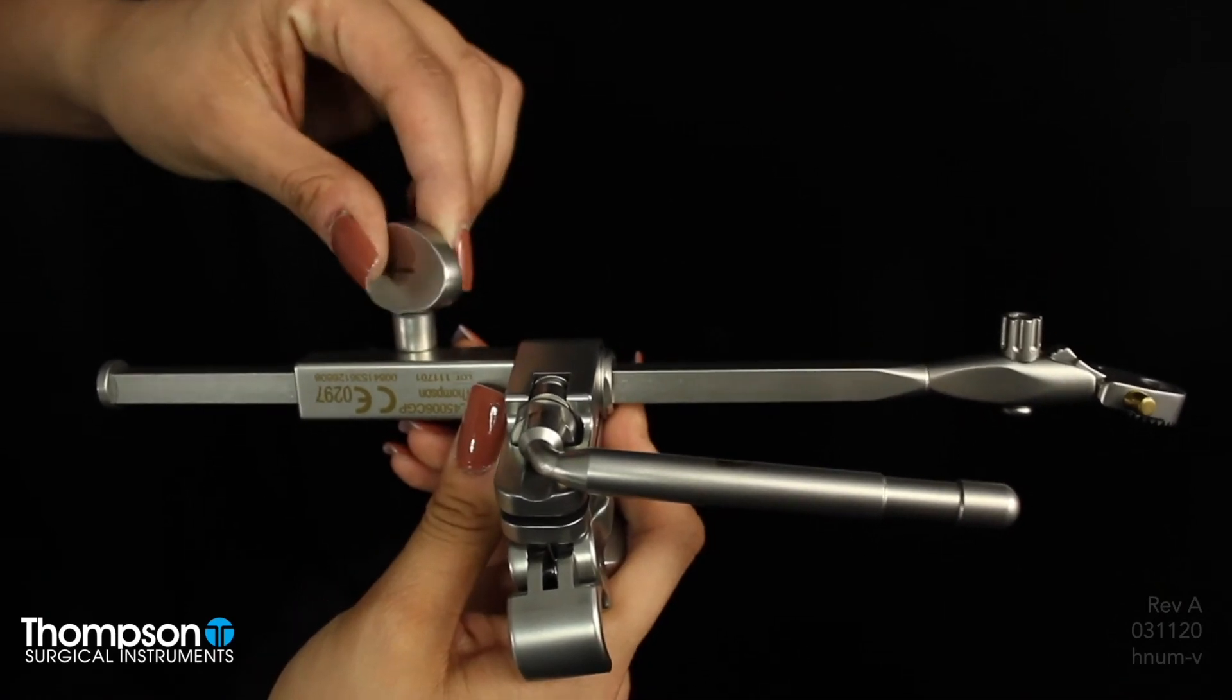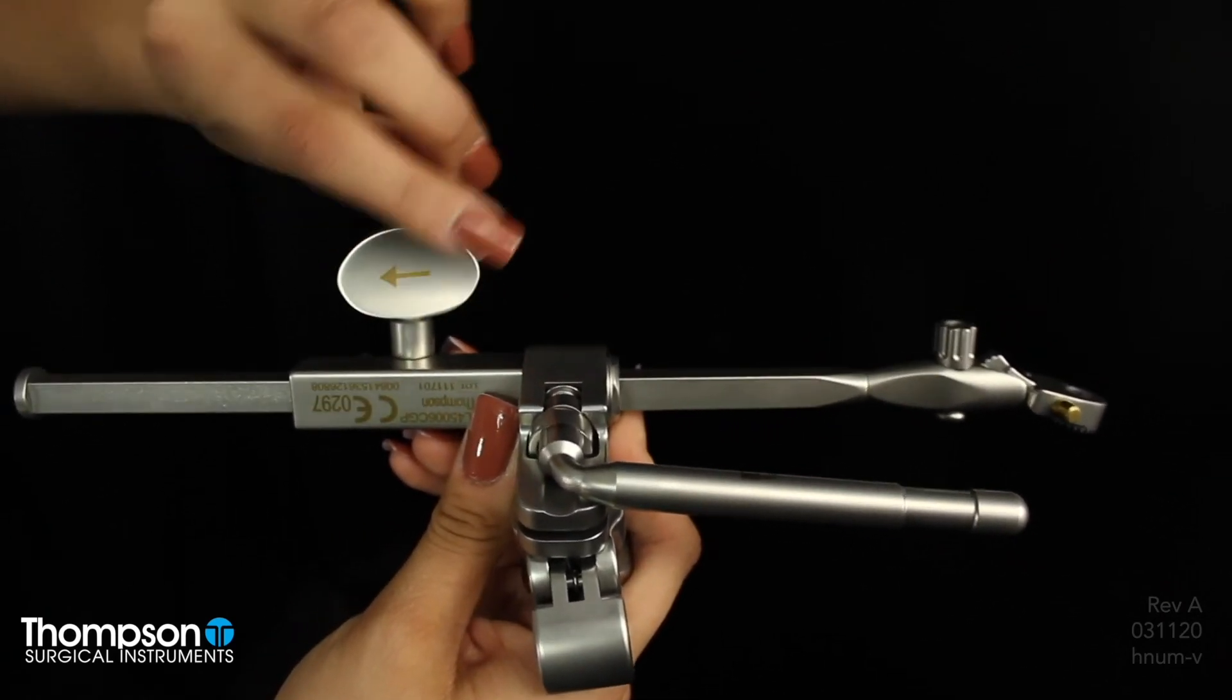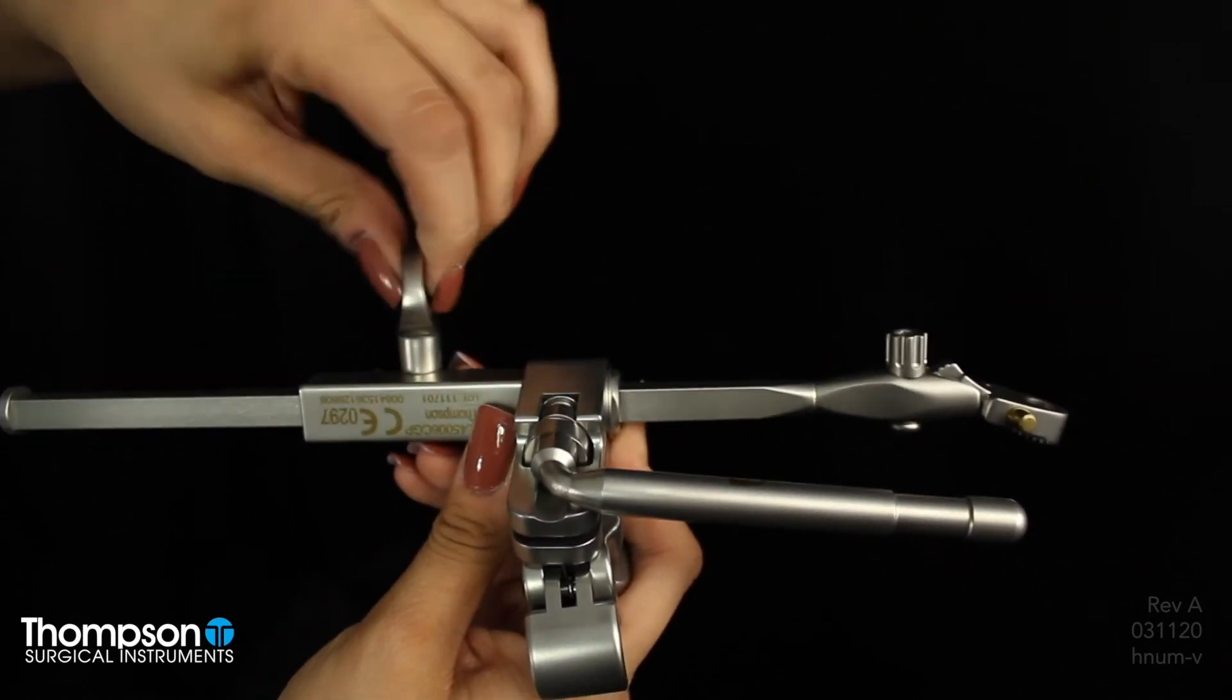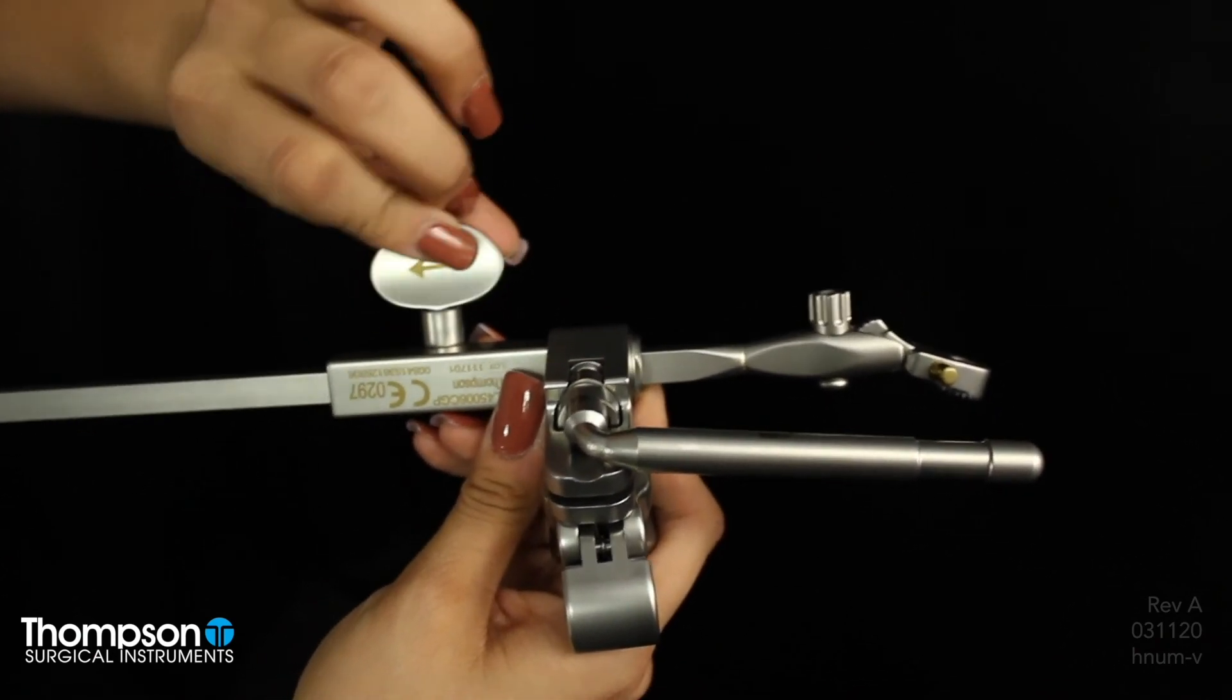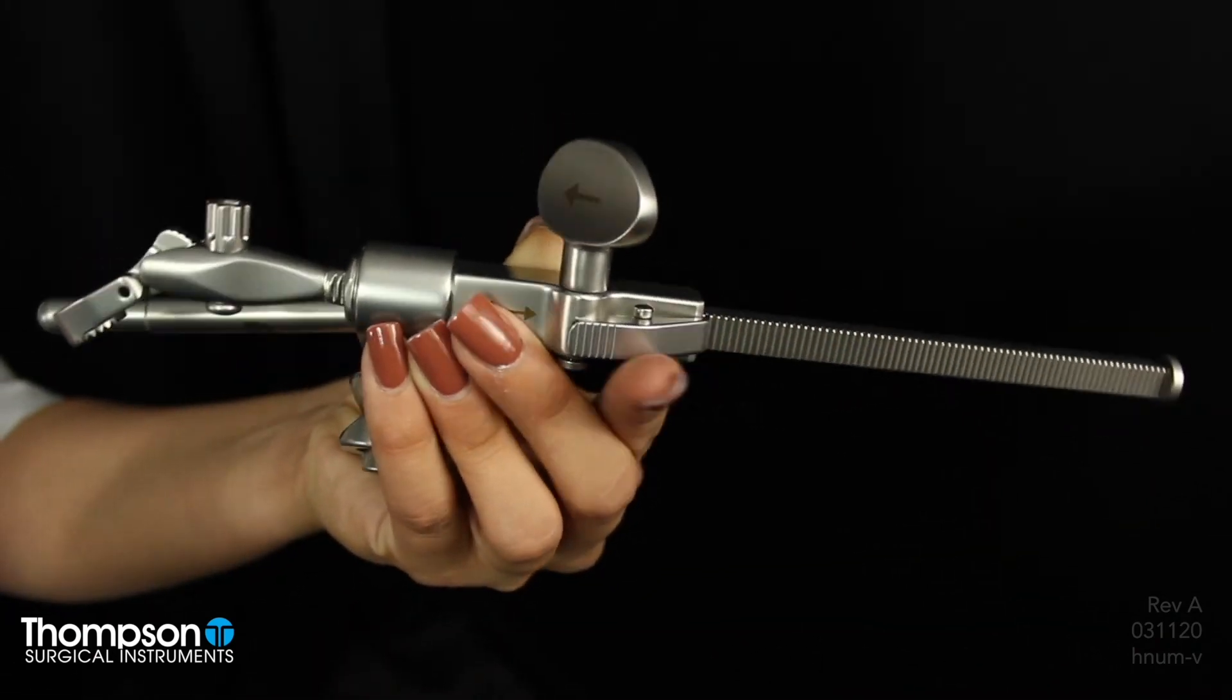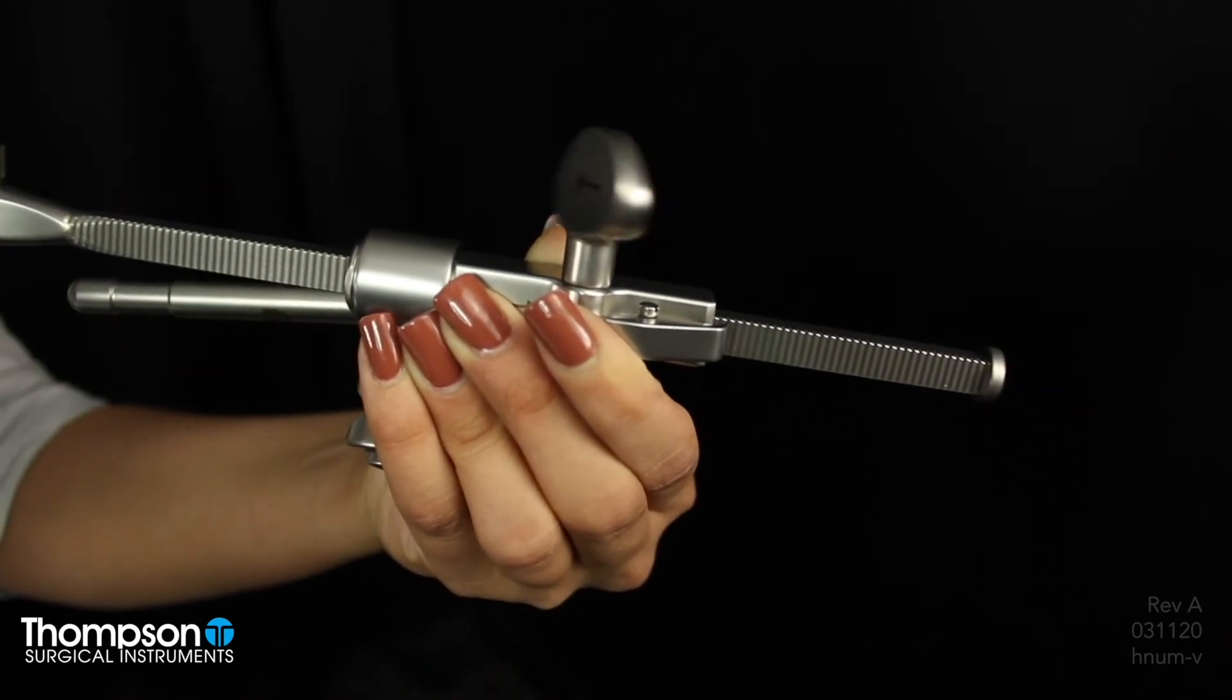Our micro-adjustable handles provide precise micro-adjustments to the blade after retraction is in place by simply turning the micro-adjustable knob to retract further. To release, simply press the pawl.